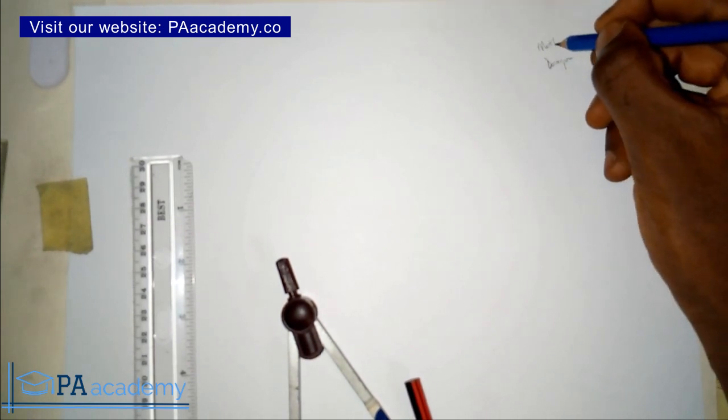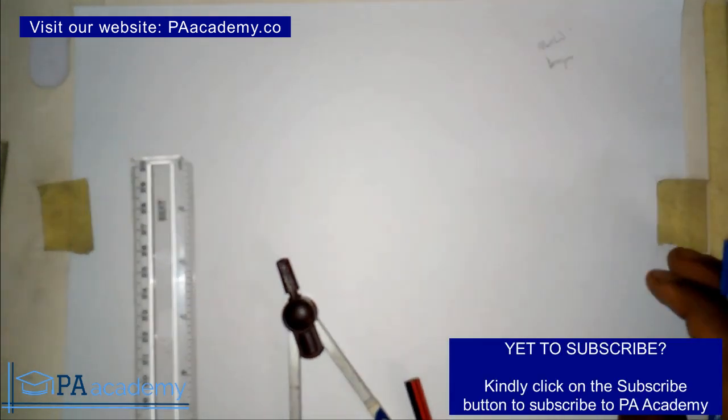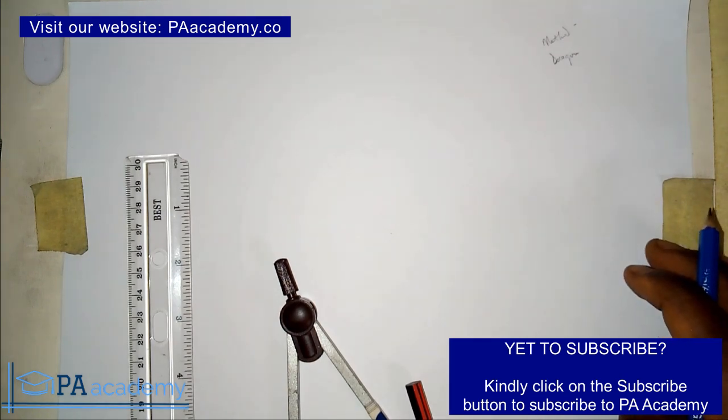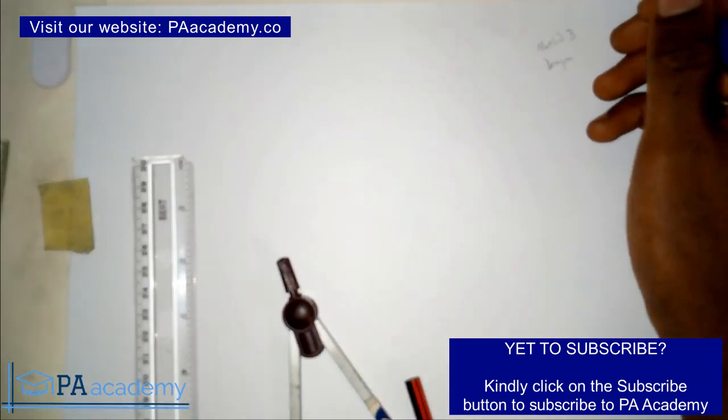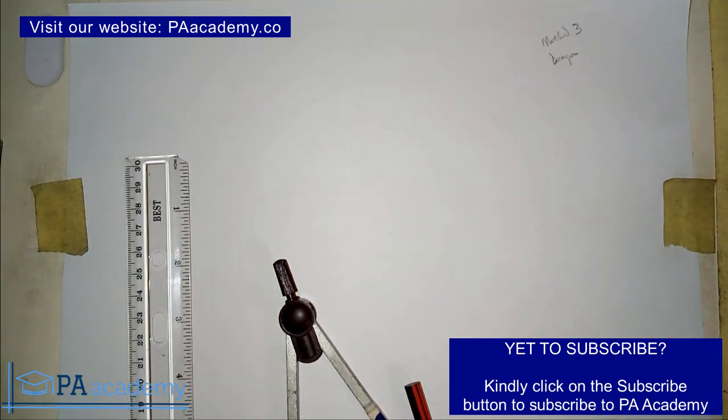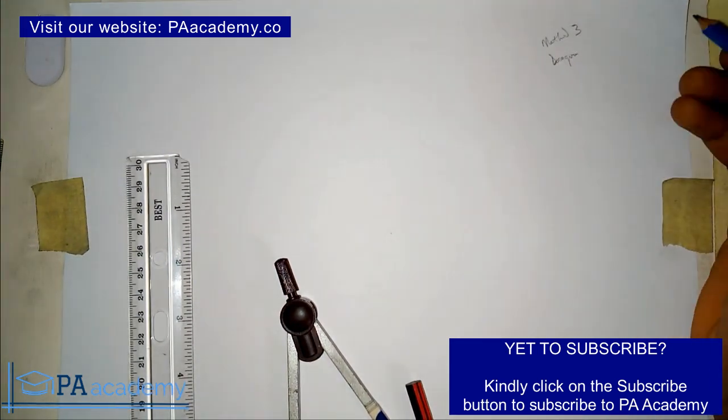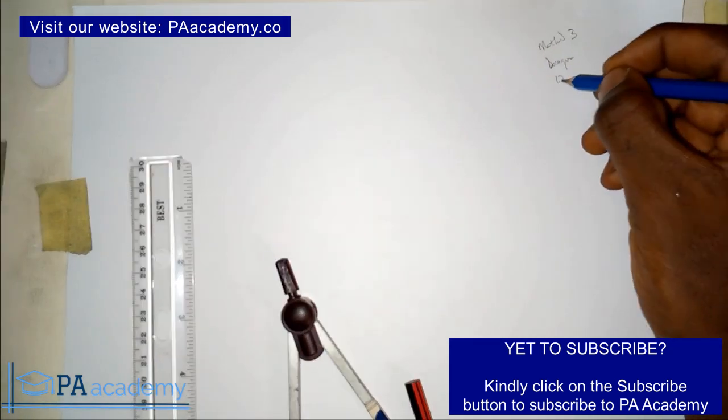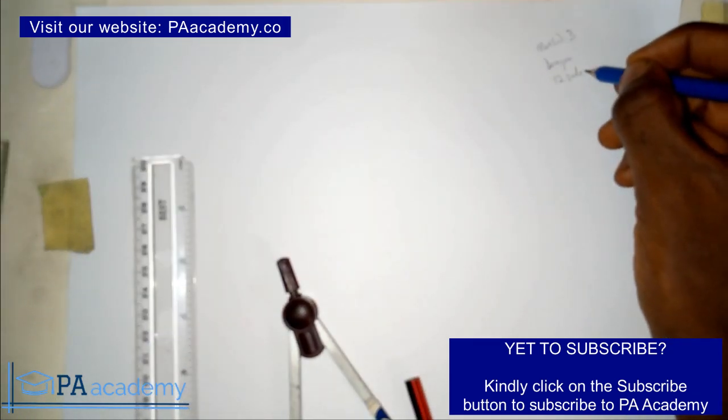This is the third method I'm going to be putting you through. In the other two parts, I've shown you other methods where you can draw a dodecagon, especially when the length of the side is given. The dodecagon is a 12-sided polygon.